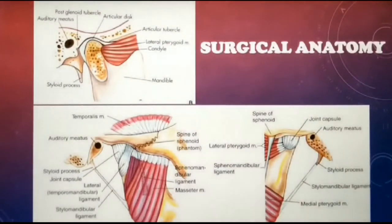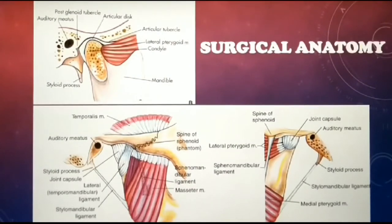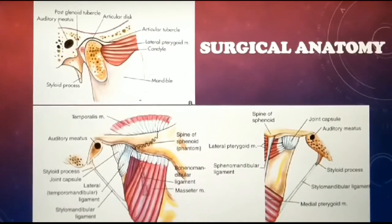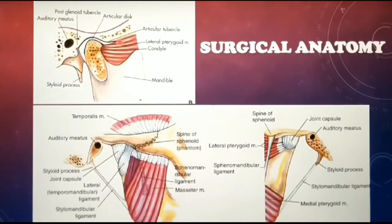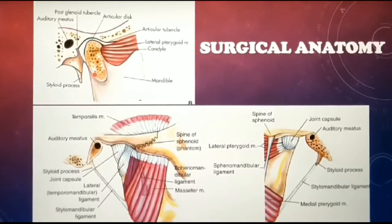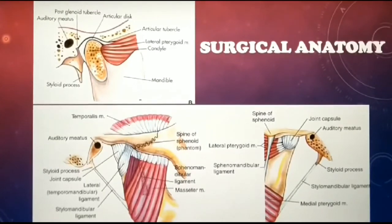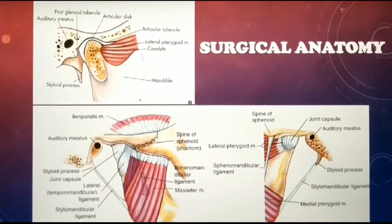Let's have a quick look at the anatomy of the temporomandibular joint. TMJ basically has two components: a passive component and an active component. Passive components are the glenoid fossa, which is part of the temporal bone; the condyle, which is part of the mandible; the articular eminence; capsules and ligaments; and the articular disc. Of these five, the glenoid fossa, condyle, and articular eminences are made up of bone or hard tissue, while the capsules, ligaments, and disc are made up of soft tissue.